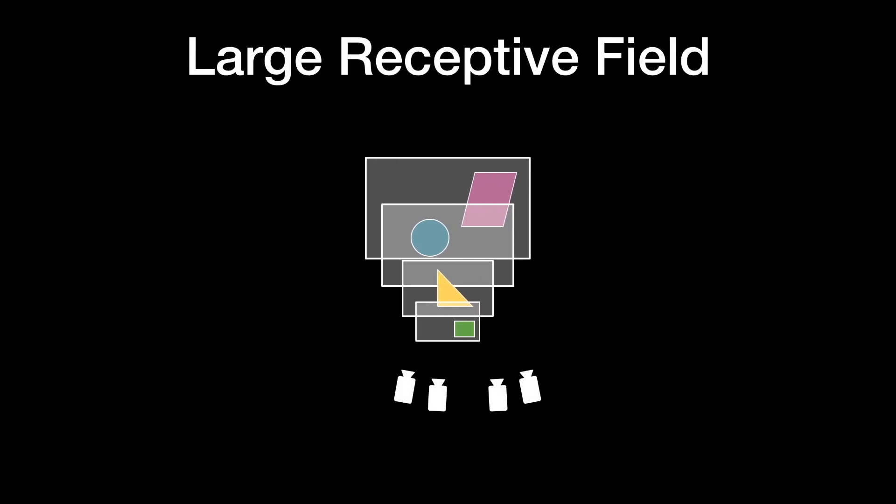For example, in this toy scene, the green square and yellow triangle in the front occlude the pink shape at the back in some of the input views. In order for a network to correctly reconstruct the pink shape, the front and back MPI layers would need to communicate, implying a very large receptive field and hence expensive network.